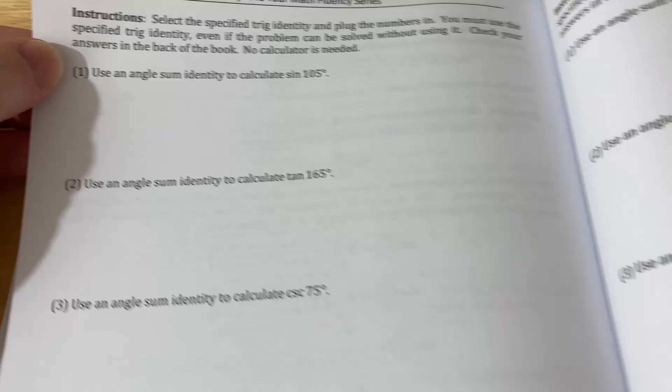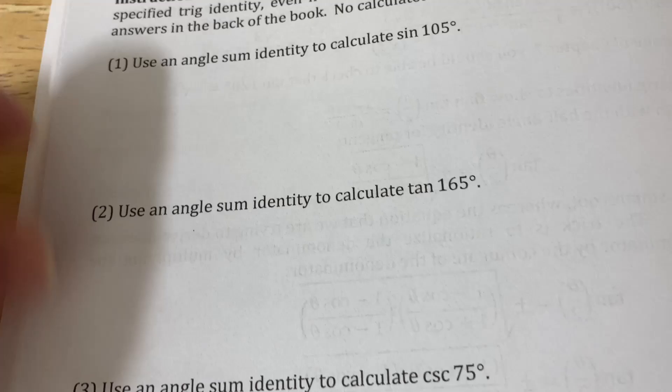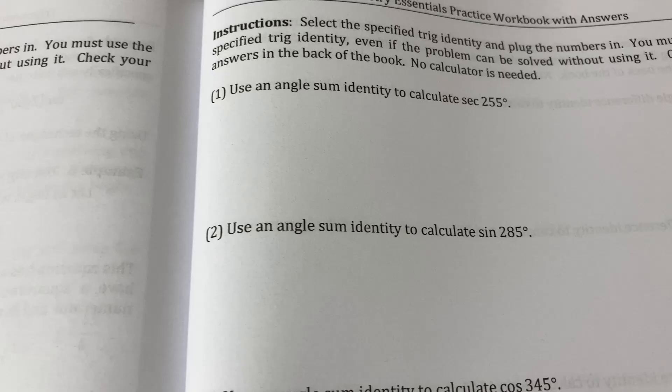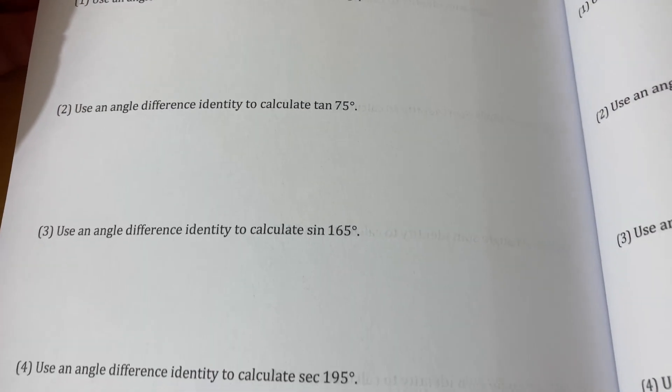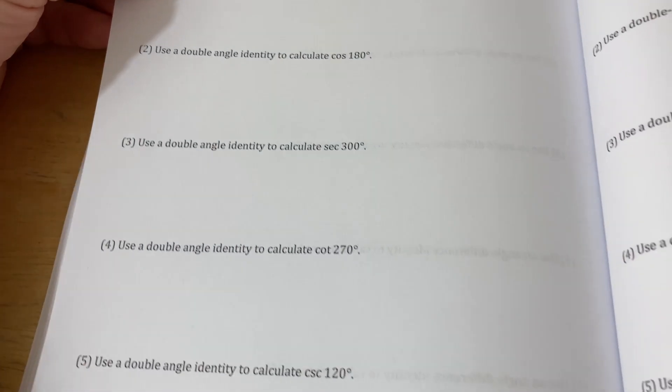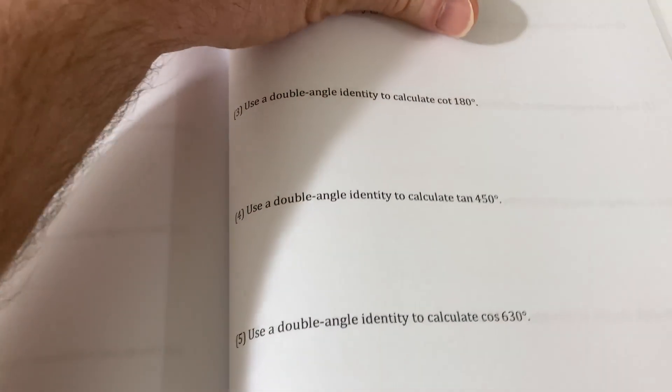And then you have problems. For example, use an angle sum identity to calculate the sine of 105. And then he's got a couple here with angle sum identities. Let's look on the next page. More angle sum identities. So tons of practice, way more than you'll get in a regular book. Now you have angle difference identities. So it's all organized. More angle difference identities. Double angle identities. Really nice. And it nicely tells you which one to use. I think that's useful. So you actually practice using that identity.